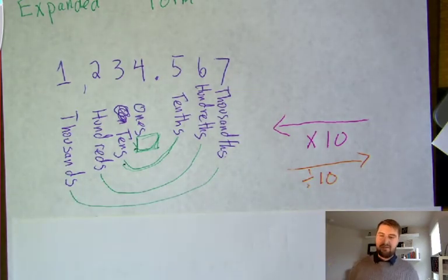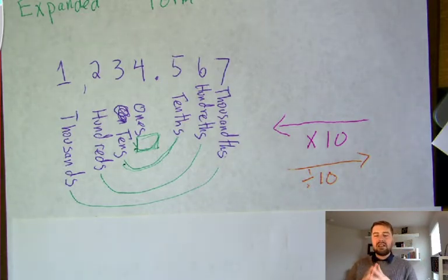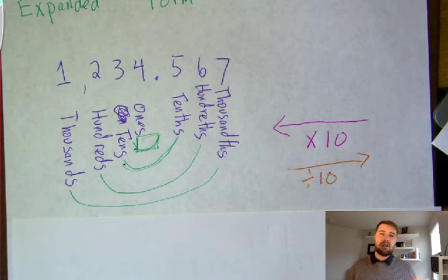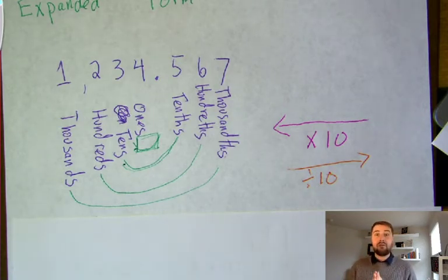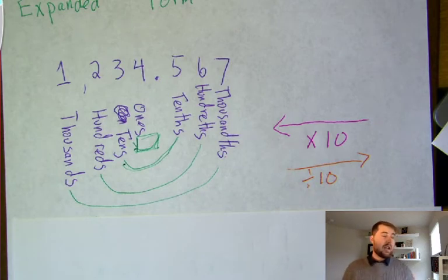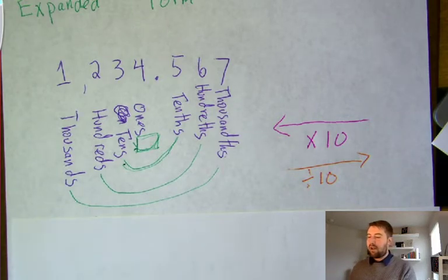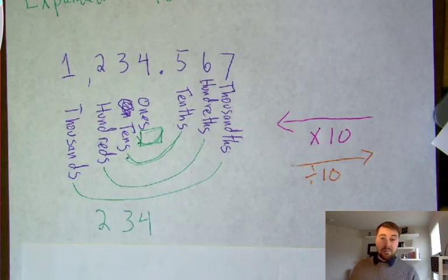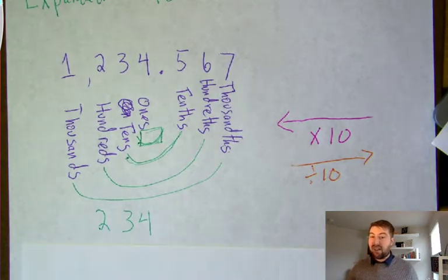Today we're talking about expanded form. Expanded form is going to help us visualize what each of these numbers represents and nail down our place value. It's also going to help us compare decimals like we started to do on Friday and will continue on Thursday. On Friday, we looked at matching up our decimal place and comparing from left to right. Starting Thursday, we'll learn other methods including expanded form. Before we begin with expanded form of decimals, we're going to look at the expanded form of a whole number.